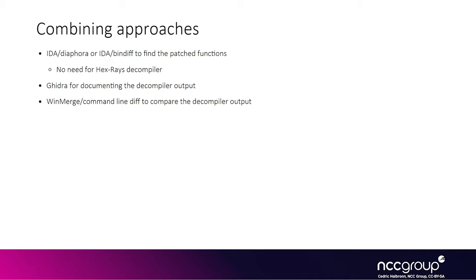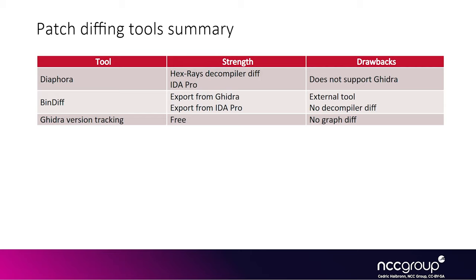If you have IDA with the Hex-Rays decompiler, the best option is Diaphora since you get C-level diffing on top of assembly diffing. If you don't have the Hex-Rays decompiler in IDA, an alternate three-step approach is recommended: use Diaphora or BinDiff in IDA or BinDiff in Ghidra to get disassembly-level diffing and locate the interesting changed functions; then since Ghidra is free and has a decompiler, document those functions in Ghidra's decompiled code; finally, use a command-line diff tool or a tool like WinMerge to compare the decompiler output as text files. To summarize: Diaphora works very well if you have a decompiler in IDA but doesn't support Ghidra; BinDiff works with both Ghidra and IDA but doesn't support the decompiler and is a standalone tool.